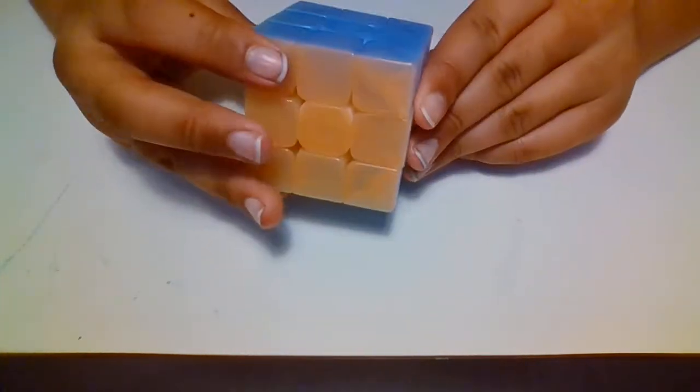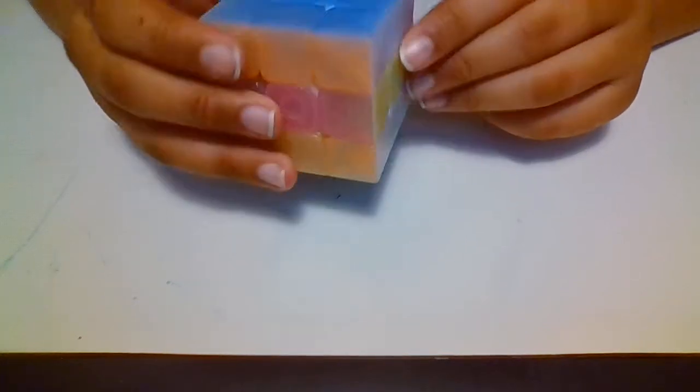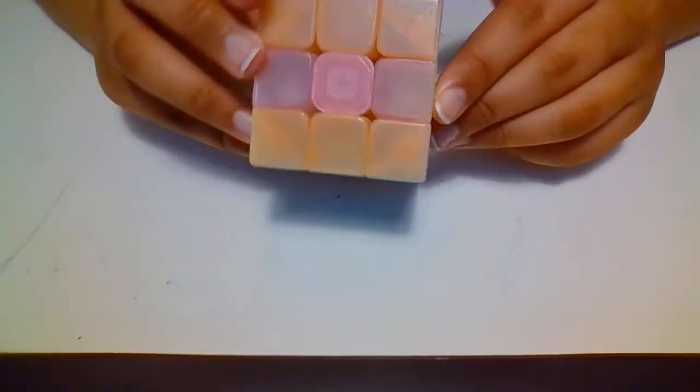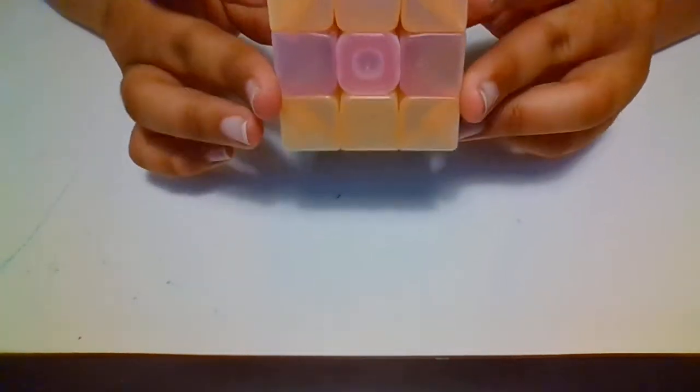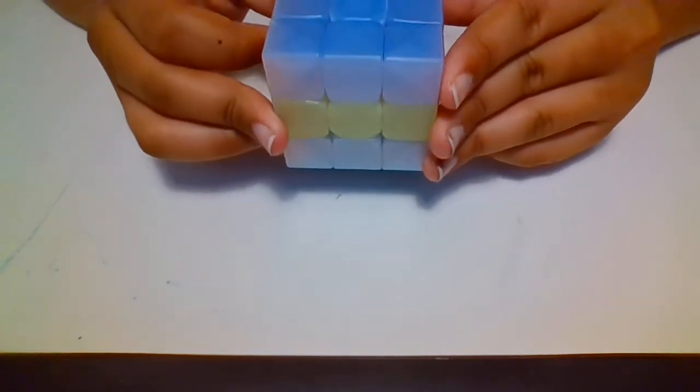So you're going to take the center and make two movements. You bring it like that, so the orange should have a strip of pink and the white should have a strip of yellow. And the same thing for the other sides.